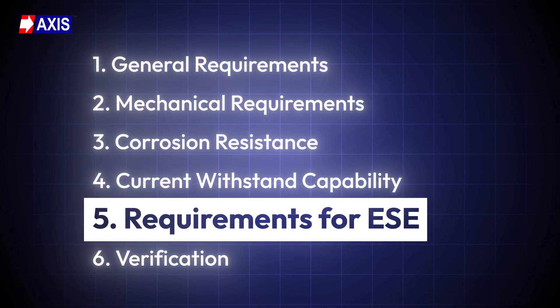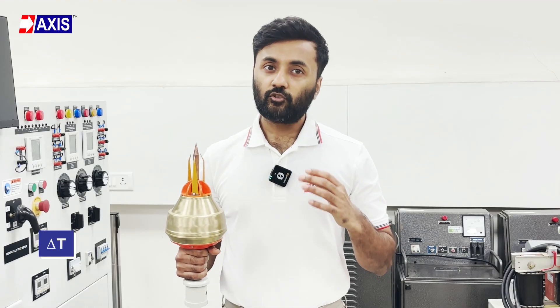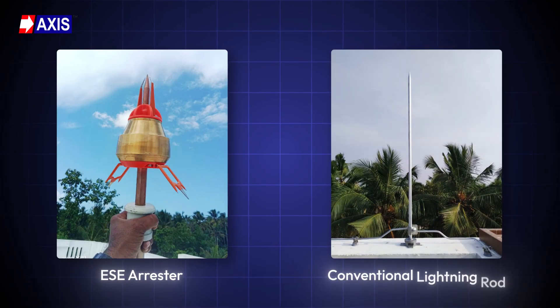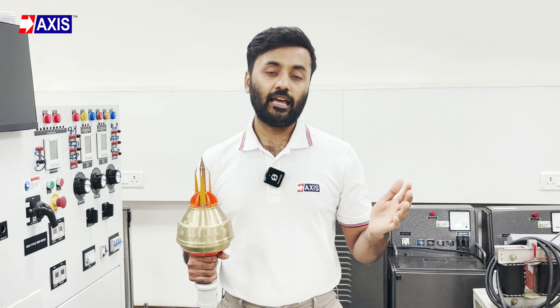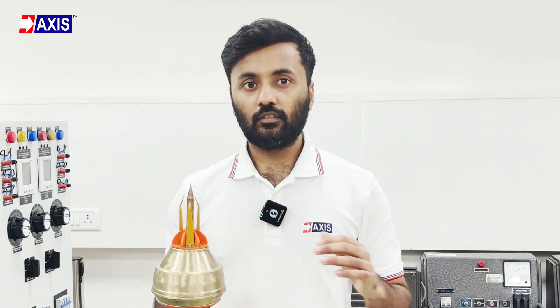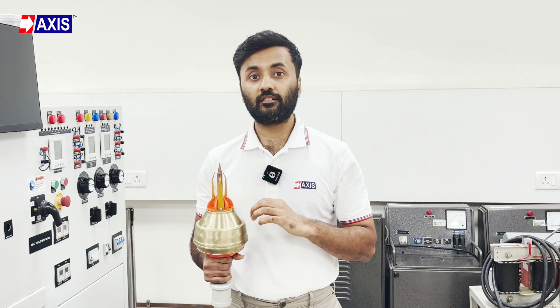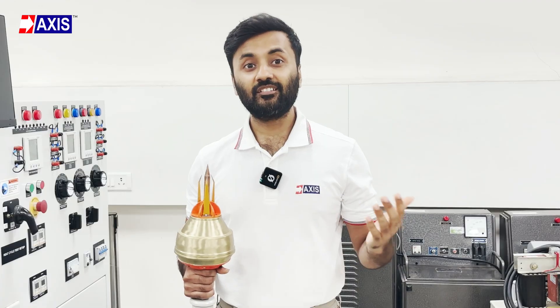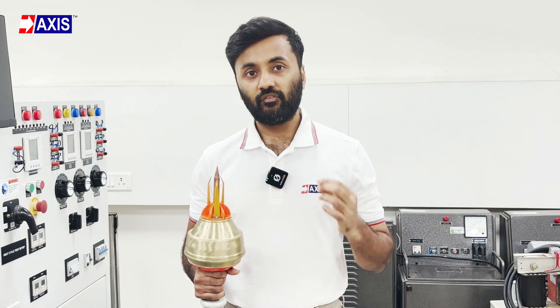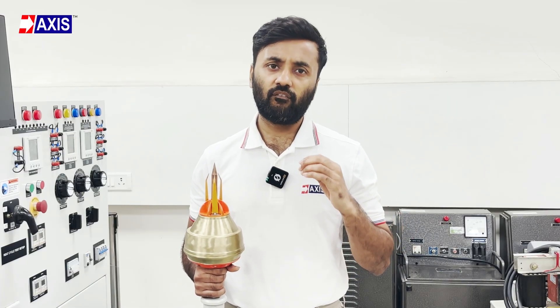Fifth, requirements for ESE: the early streamer emission is measured as a time difference called delta T. It shows how early the ESE arrester responds compared to a conventional lightning rod under the same conditions. Delta T must fall between 10 and 60 microseconds. If it is below 10, the device is not considered an ESE arrester. If it is above 60, the value is capped at 60 microseconds for all protection calculations. A higher delta T means the arrester reacts earlier and protects a wider area. The components that capture the lightning strike — mainly the tip of the lightning arrester — must meet size and finish requirements given in NFC 17-102. The striking point must be made from solid metal with a smooth continuous surface. If it has a coating, the minimum thickness must be 50 microns and it must be free of defects like cracks or tarnishing.